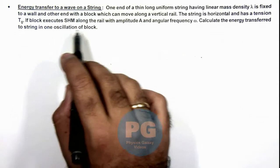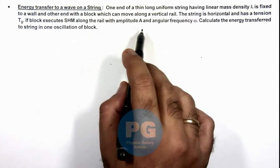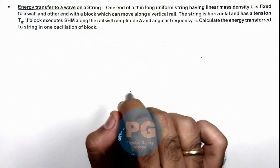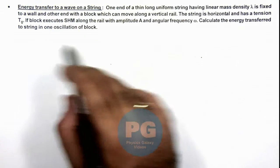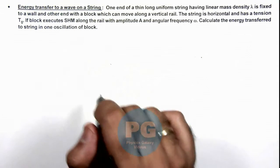The block executes SHM along the rail with amplitude A and angular frequency omega. We are required to calculate the energy transferred to the string in one oscillation of the block.